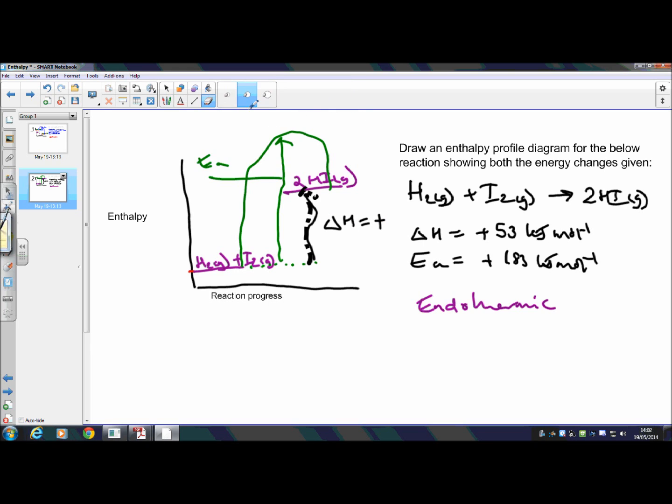But the three marks, again, come from labeling reactants and products. In this case, endothermic reactions, so your reactants have to be lower.